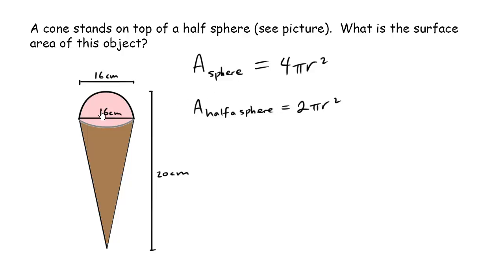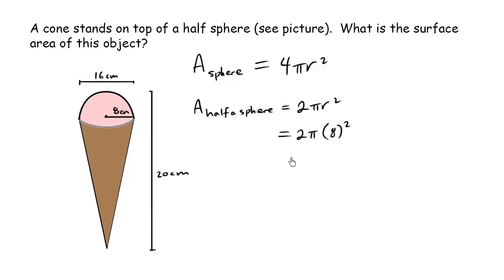Now we know what r is. The diameter of this sphere is 16 centimeters, so half of that — the radius — is going to be 8 centimeters. So the area of half a sphere is equal to 2π × 8², and 8 times 8 is 64, and 64 times 2 is 128. So we have 128π as the area of half a sphere — that's that yummy pink area.